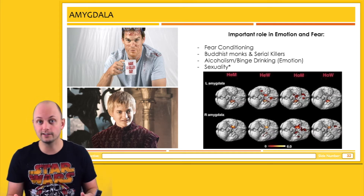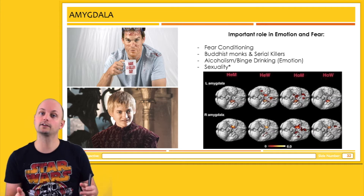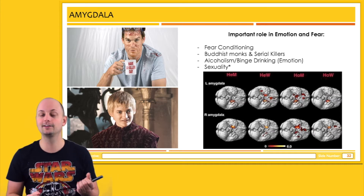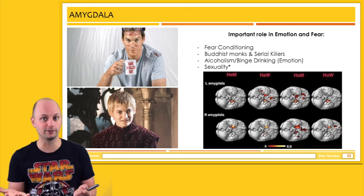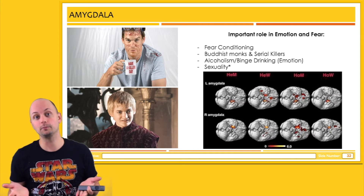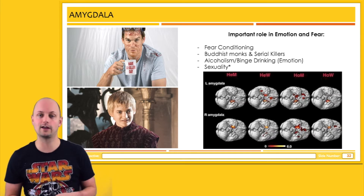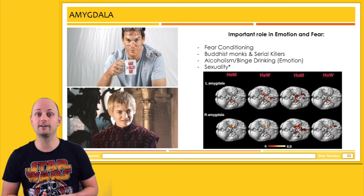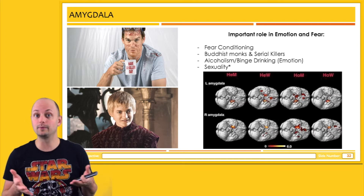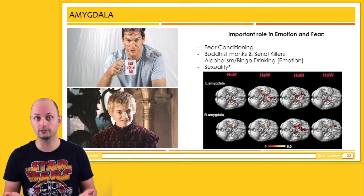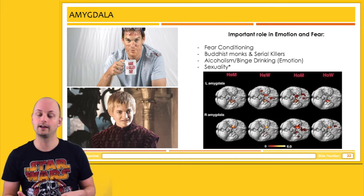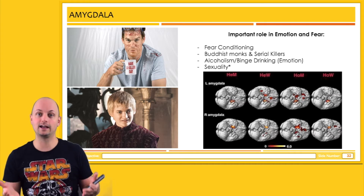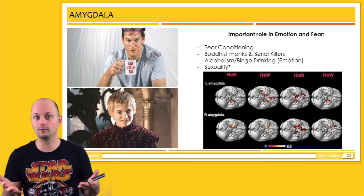One of my favorite studies of the amygdala compared the size of the amygdala in Buddhist monks to serial killers, and found that Buddhist monks — who have a reputation for being very benevolent — have larger amygdalas than the serial killers, who, as you guessed it, are not as benevolent, and actually have smaller amygdalas.